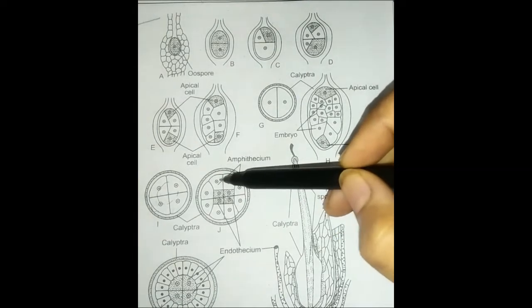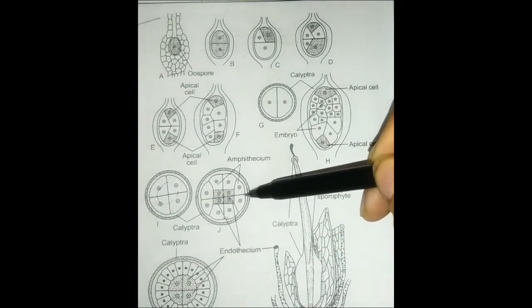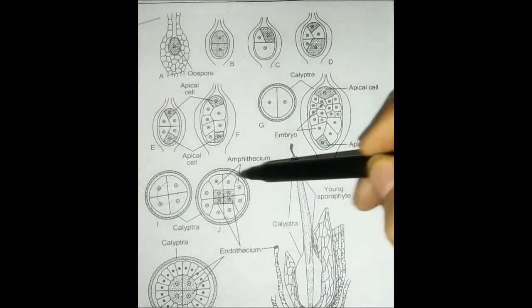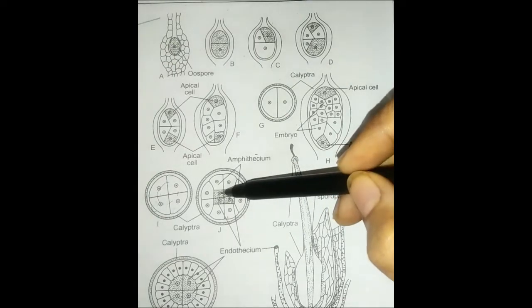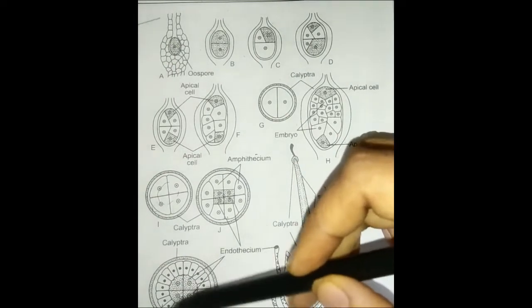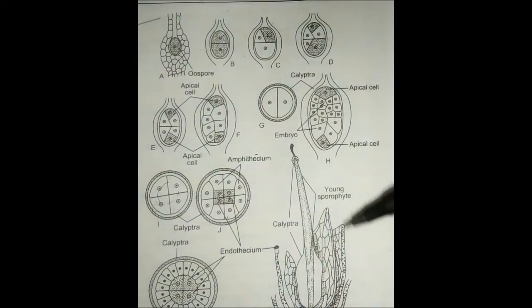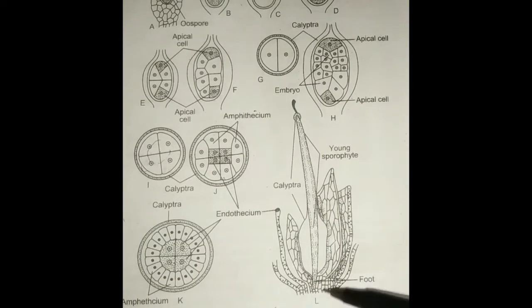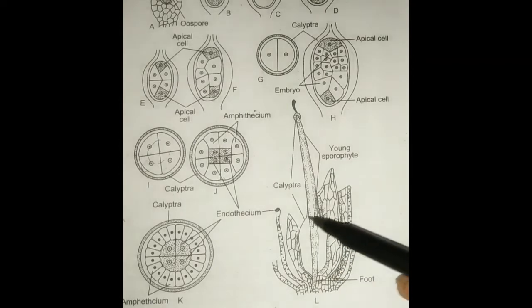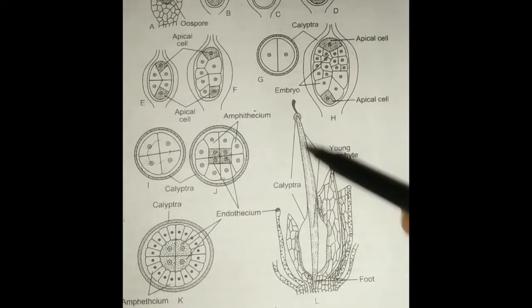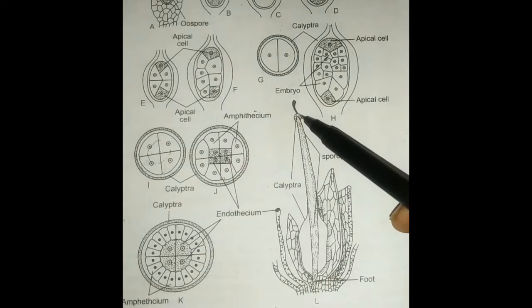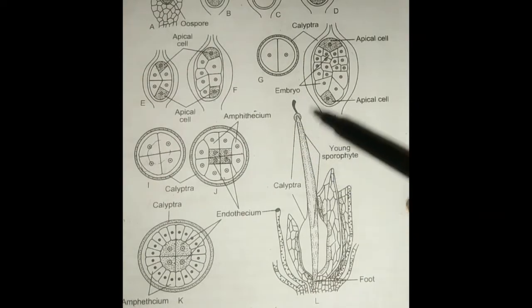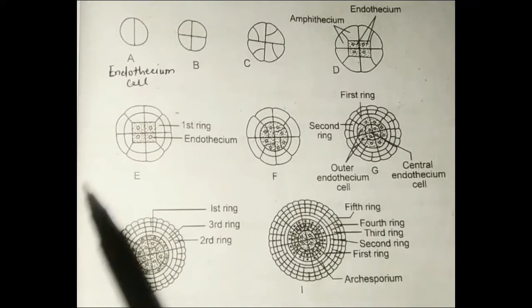The outer amphithesium cells — initially 1, 2, 3, 4 were made — undergo anti-clinal division, producing 8 outer cells which we call amphithesium, and inside 4 inner cells. Now the endothesium cells are inside, and outside is formed the safety layer called calyptra. The calyptra protects the sporophyte, and now the formation of the seta is starting. The capsule formation is a different process which we will study separately.